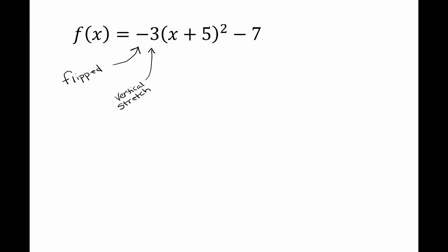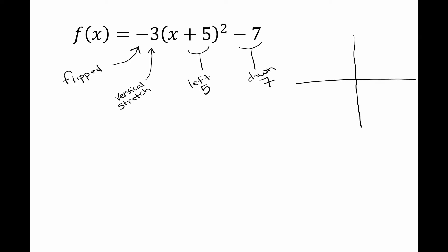We also know from the three that it's going to be a vertical stretch, making your parabola a little skinnier than normal. The plus five inside with the x is going to make your graph go in the opposite direction — so it goes to the left five. The minus seven at the end makes it go down seven. Any number outside your parabola moves it up or down in the direction you see.